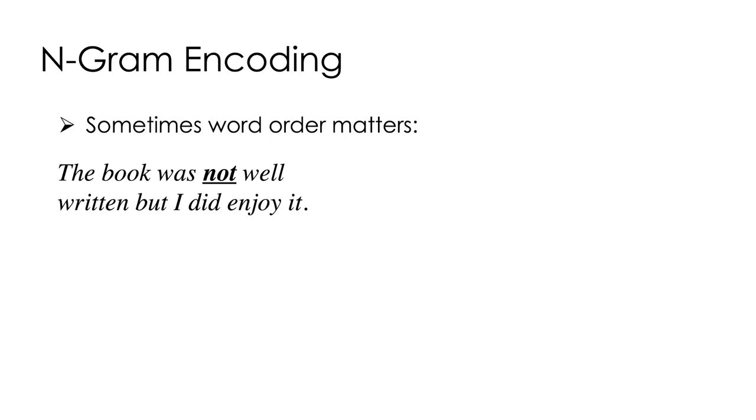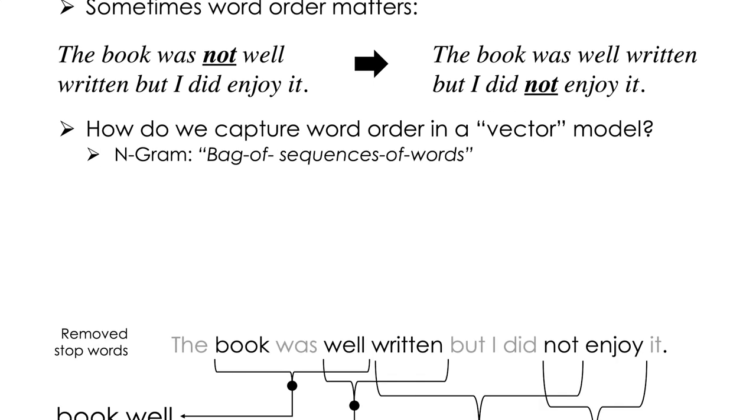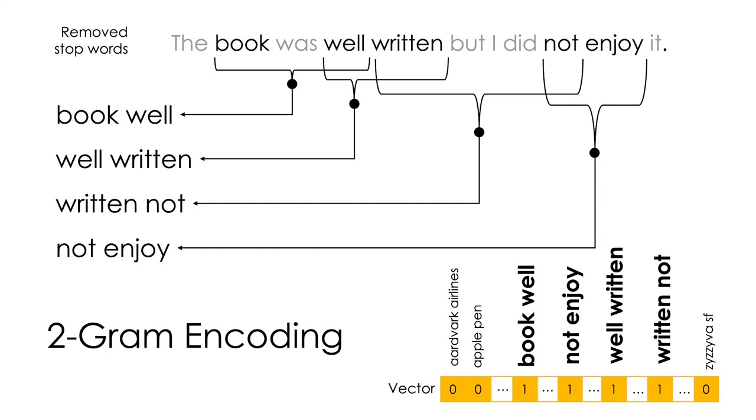As I alluded to earlier, in many cases the ordering of words does matter. For example, the book was not well written, but I did enjoy it, is very different from the book was well written, but I did not enjoy it. One of the challenges is capturing the word ordering in a vector model. And this is done using n-gram encodings. This is sort of like a bag of sequence of words. Rather than counting the number of occurrence of individual words, we count the number of occurrence of pairs, triplets, and so on of words.